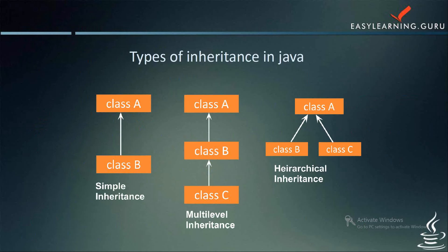In simple inheritance, as you can see in the figure, class A is inherited by class B. So we have class B which is a subclass of class A. There is an is-a relationship between them.